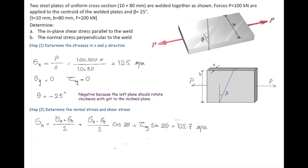Sigma x was 125, sigma y and tau xy are zero and theta is negative 25 and that would result in 102.7 megapascals.